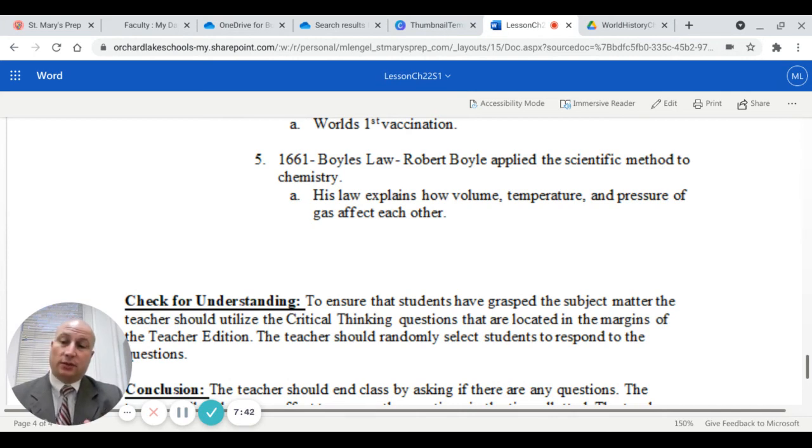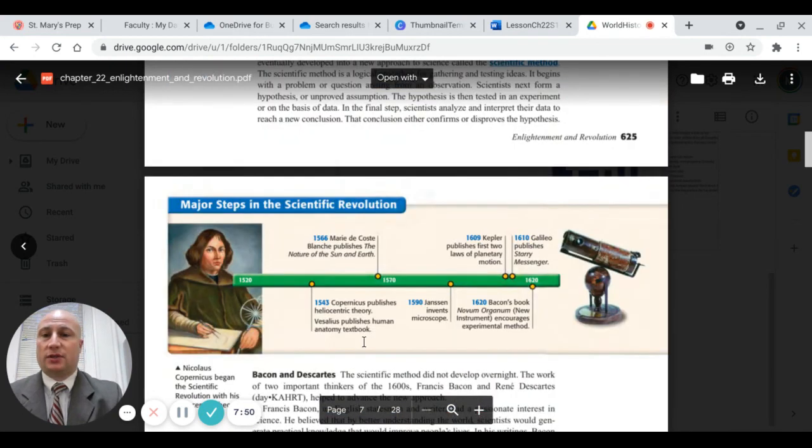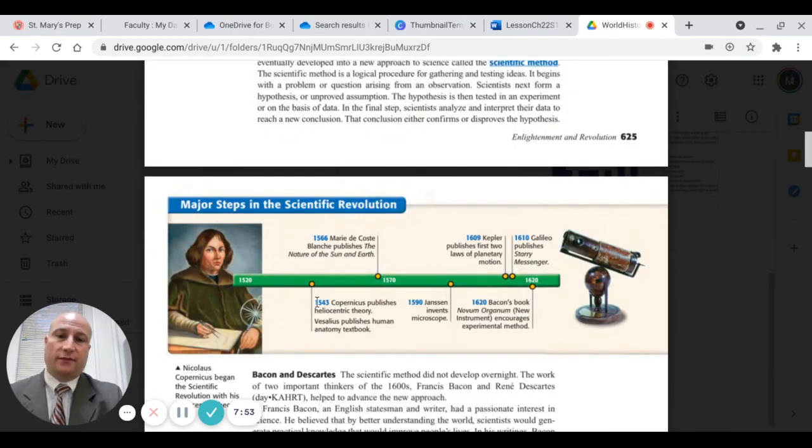Thank you for listening. We're going to take a look at many more revolutions from this point on. Let's take a quick look at a timeline of some of the events that we covered. Copernicus in 1543 publishes ideas on the heliocentric theory. The invention of the microscope by Janssen in 1590. Johannes Kepler publishes one of his first major writings in 1609. Galileo publishes his Starry Messenger in 1610. Francis Bacon's book, New Instrument, encourages the experimental method or empiricism in 1620. Thank you.